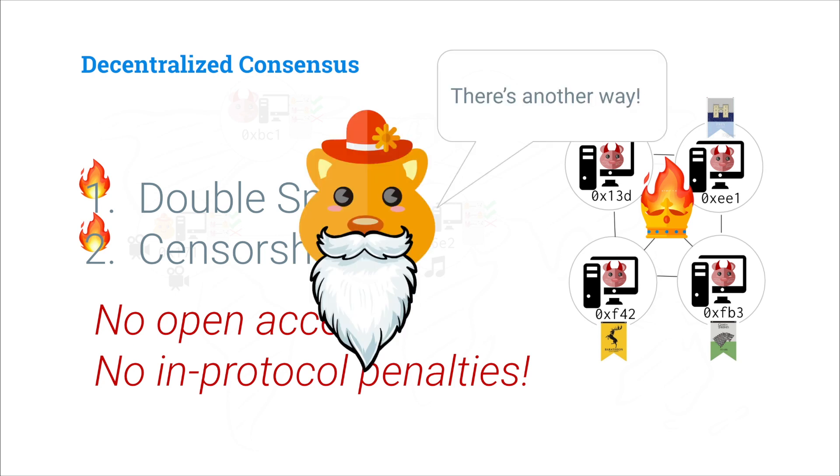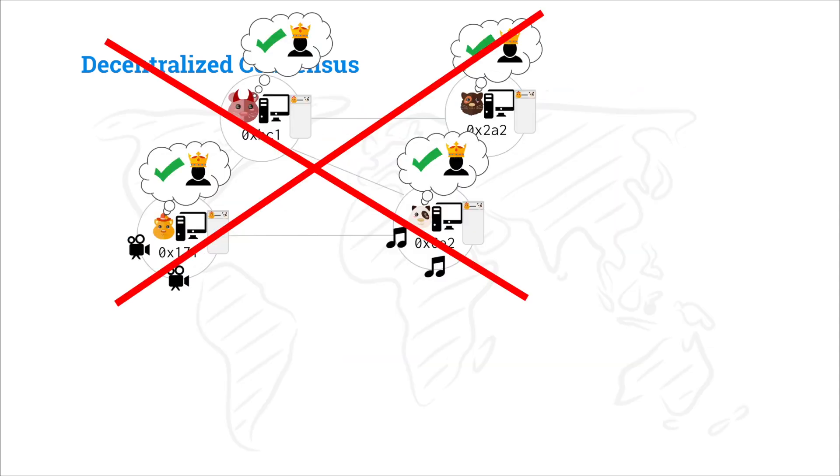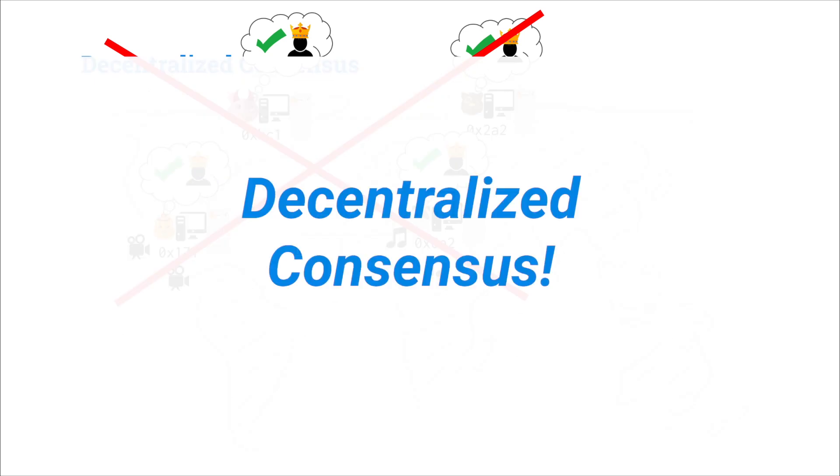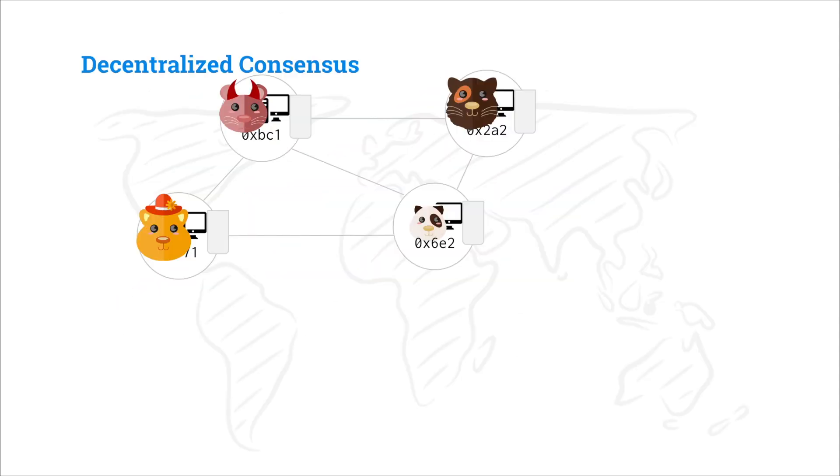But there is another way to build this decentralized ledger. Rather than having everyone agree on an authority node, we can have decentralized consensus, where any of our nodes can participate and take turns being the authority node and proposing which transactions everyone should include in their ledger next.